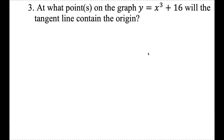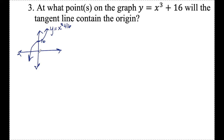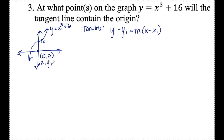Number 3: at what point or points on the graph of y equals x cubed plus 16 will the tangent line contain the origin? I'll sketch x cubed plus 16 — it's my regular x cubed graph shifted up 16 units. I'm finding points where a tangent line passes through the origin, the point (0, 0). Tangent lines have the form y minus y1 equals m times x minus x1. Since the line passes through (0, 0), I plug that in and get y minus 0 equals m times x minus 0, which simplifies to y equals mx.